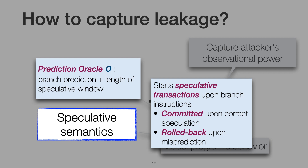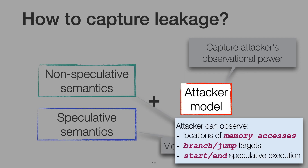Then, the semantics starts a so-called speculative transaction. When the speculative window reaches zero, the semantics checks the prediction. Speculative transactions are committed whenever the prediction is correct and rolled back otherwise. Regarding the attacker model, we consider an attacker that can observe the addresses of all memory accesses, the changes to the program counter introduced by branch and jump instructions, and the beginning and end of speculative execution.